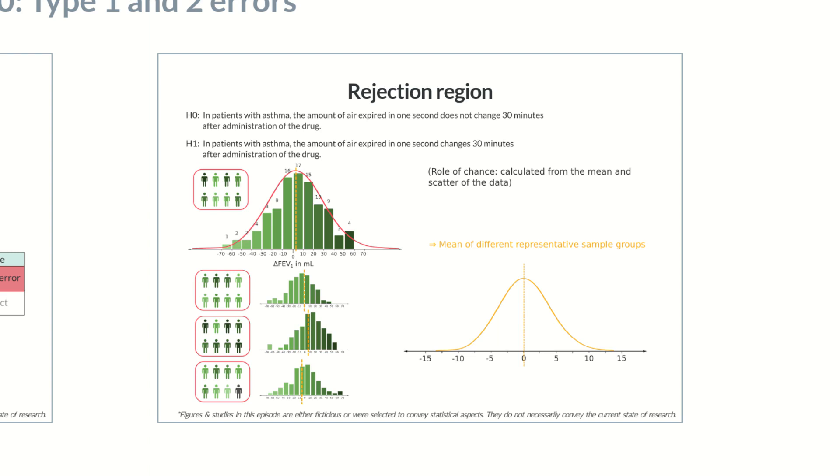An acceptable probability level of the type 1 error is defined during the study design. In medical research, the type 1 error rate, also called the significance level or simply denoted with alpha, is usually set to 5%. If a one-tailed test is performed, this 5% lie on the side of the curve whose range of values is examined.